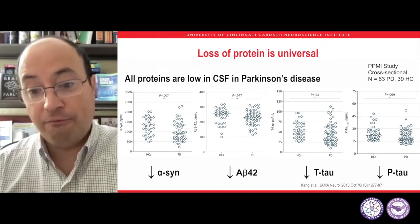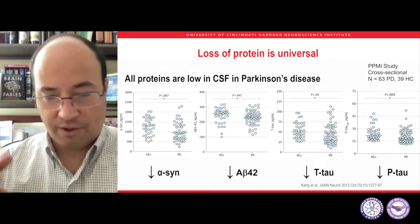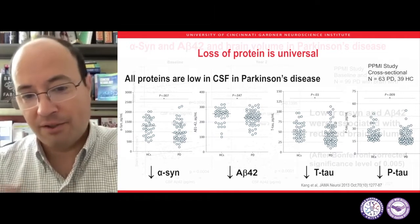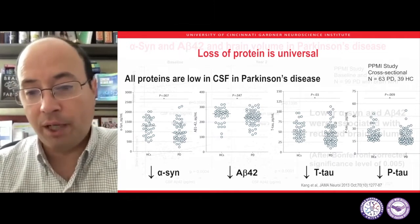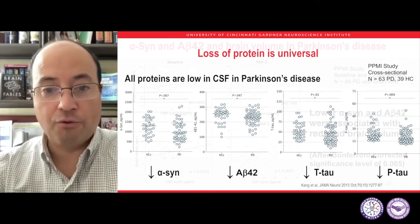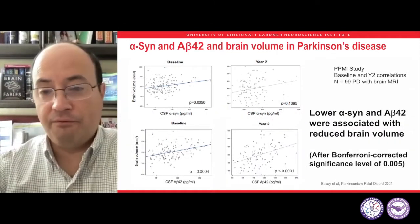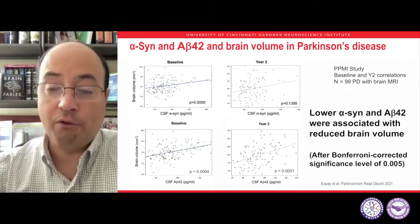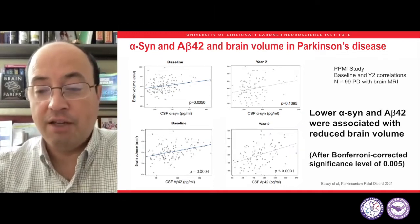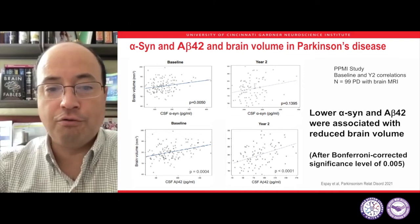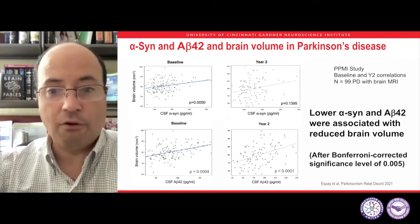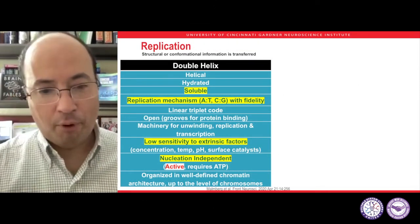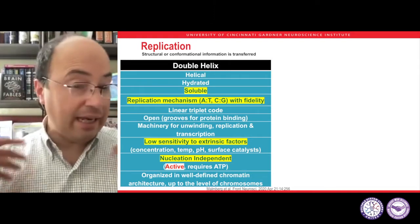If we measure these proteins in spinal fluid, we see that the levels are low. Here is the example of protein levels in Parkinson's disease — all of them are actually lower compared to a population of healthy controls. In fact, we've shown that the lower the levels, the greater the brain atrophy. So levels of the normal fraction of the protein should be higher to maintain brain volume and therefore normal function in the best possible way.